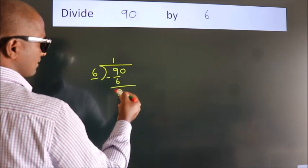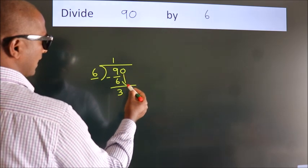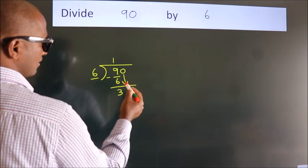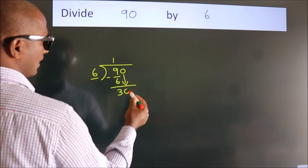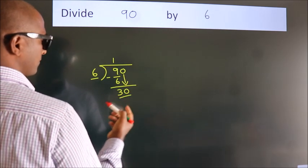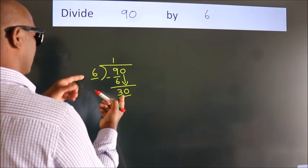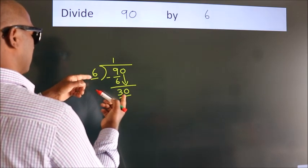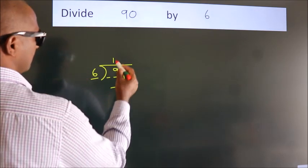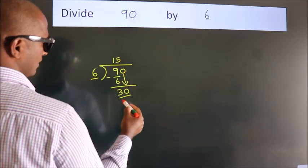After this, bring down the beside number. So, 0 down — so, 30. When do we get 30? In the 6 table, 6 fives 30.